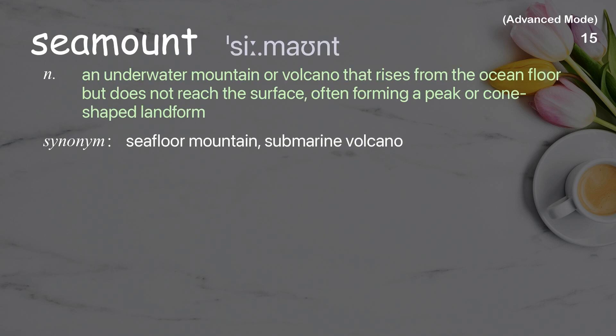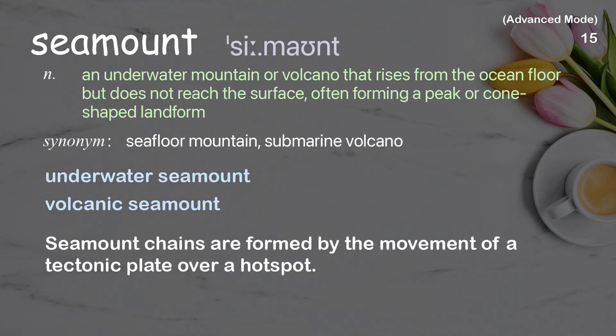Seamount. An underwater mountain or volcano that rises from the ocean floor but does not reach the surface, often forming a peak or cone-shaped landform. Examples: underwater seamount, volcanic seamount. Seamount chains are formed by the movement of a tectonic plate over a hotspot.